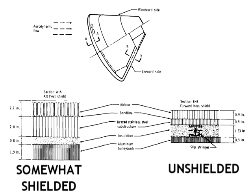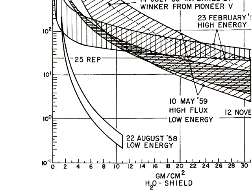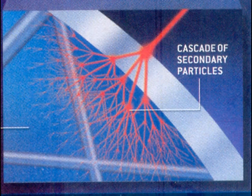But let's play along with his numbers and say the entire craft was rated at 8 grams per square centimetre. If we look back to the chart in Astronautical Engineering and Science, we find that a ship with a water shield of 8 grams per square centimetre would indeed reduce the dose from the August 22nd 1958 flare down to around 10 to the 0, or 1 rem per hour. That certainly seems safe for astronauts, but there are some problems. Namely, this chart demonstrates only the primary doses of radiation, not the secondary doses received from photons and secondary particles produced by the primary particles impacting with the shielding.